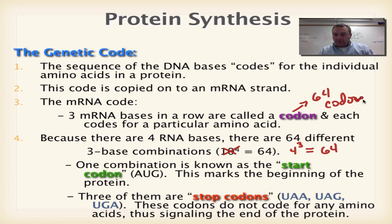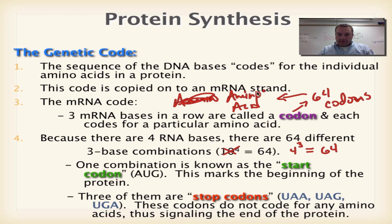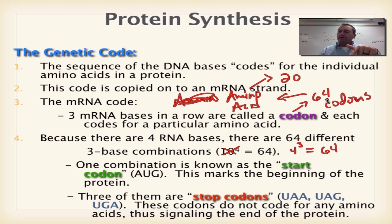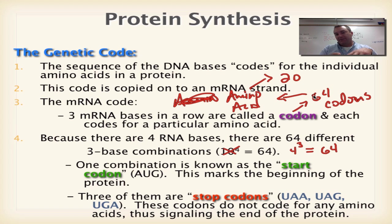What do codons code for? Codons are going to code for amino acids. If you can recall from chapter 2 when we were talking about basic chemistry, there are 20 different amino acids. We have 64 codons and they code for only 20 things. So what's going to happen is there's going to be more than one codon that codes for a particular amino acid — one amino acid might have three or four different codons that code for it. That's how we take care of this redundancy.